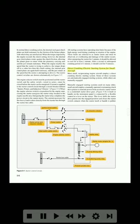Direct cranking electric starting system for small aircraft. Most small reciprocating engine aircraft employ a direct cranking electric starting system. Some of these systems are automatically engaged starting systems, while others are manually engaged. Manually engaged starting systems used on many older small aircraft employ a manually operated over-running clutch drive pinion to transmit power from an electric starter motor to a crankshaft starter drive gear. A knob or handle on the instrument panel is connected by a flexible control to a lever on the starter.